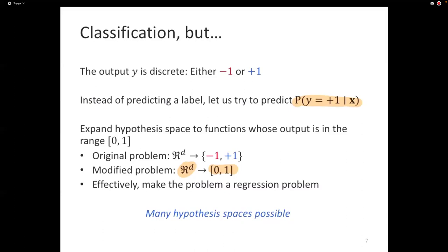The range is a number between 0 and 1, so we need to predict a real number — we are dealing with a regression problem. There are many hypothesis spaces possible, but we are learning a function that produces a probability, not a function that directly produces a label. We want to produce the function that takes input x and produces a number between 0 and 1, interpreted as the probability of y equals 1.